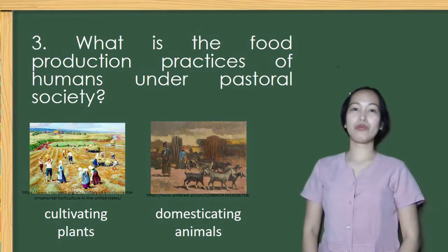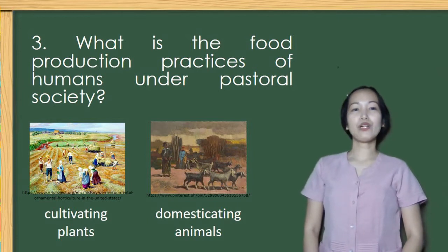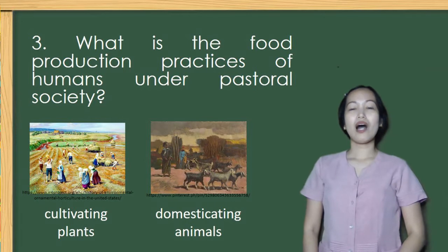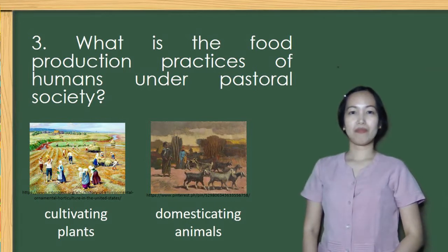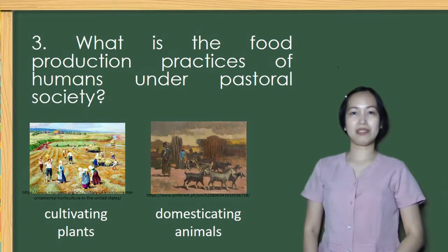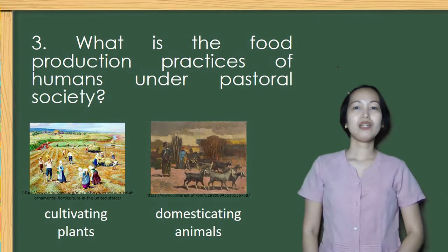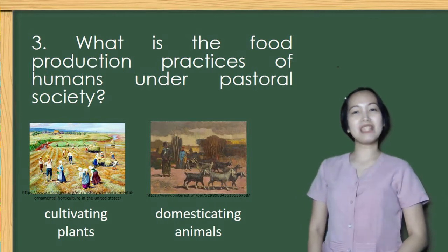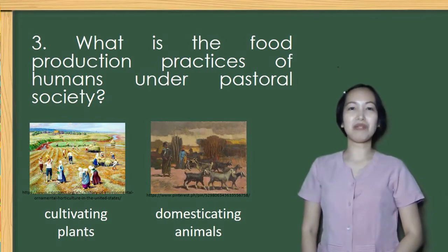Number 3. What is the food production practice of humans under pastoral society — cultivating plants or domesticating animals? The correct answer here is domesticating animals.